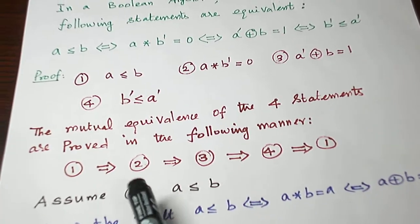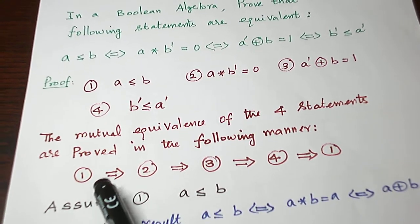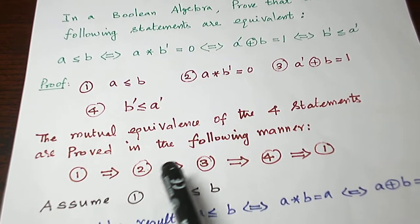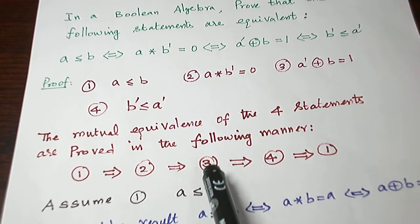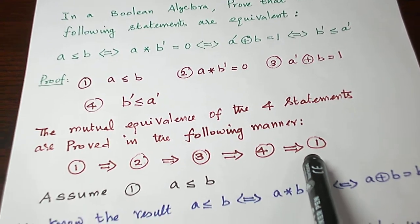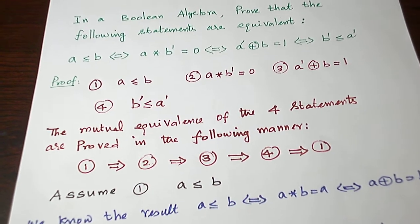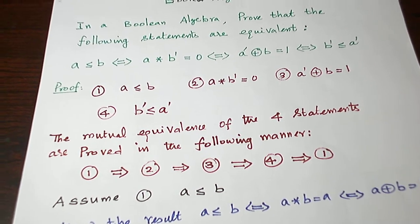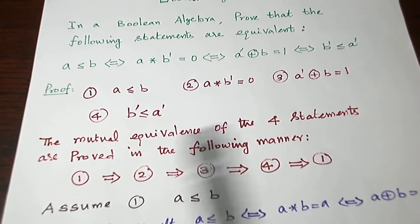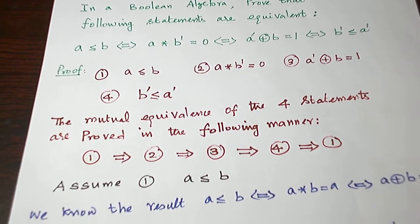For that we can follow this method: 1 implies 2, 2 implies 3, 3 implies 4, and the fourth statement implies the first statement. So if it comes around in a circular way, we can prove the mutual equivalence of all the four statements.